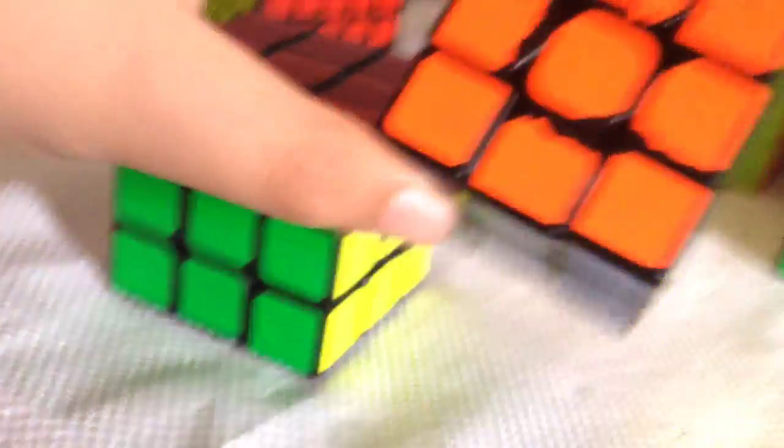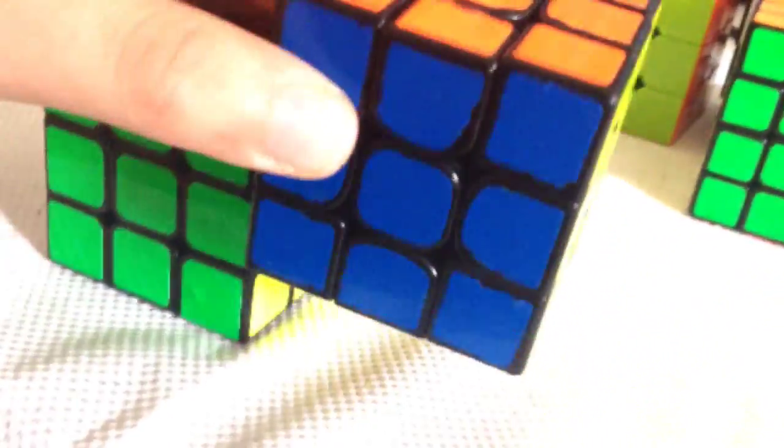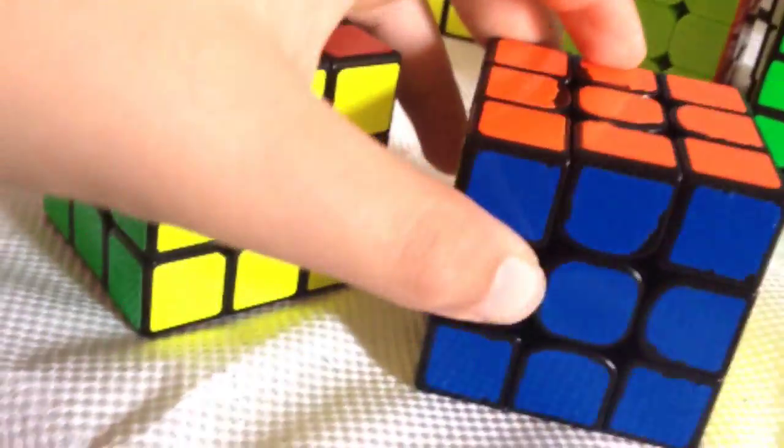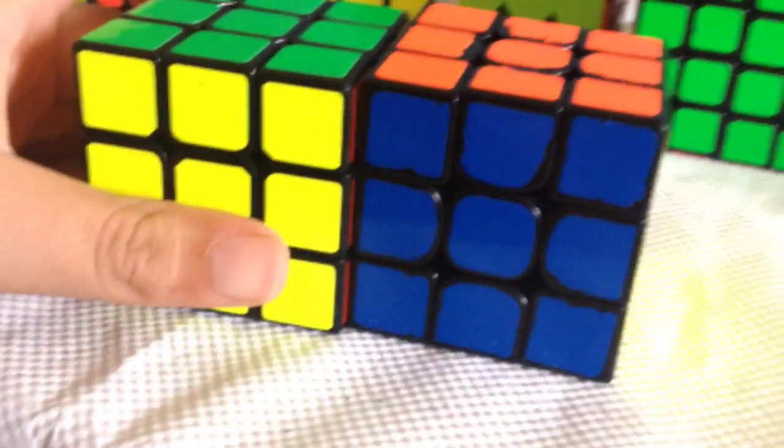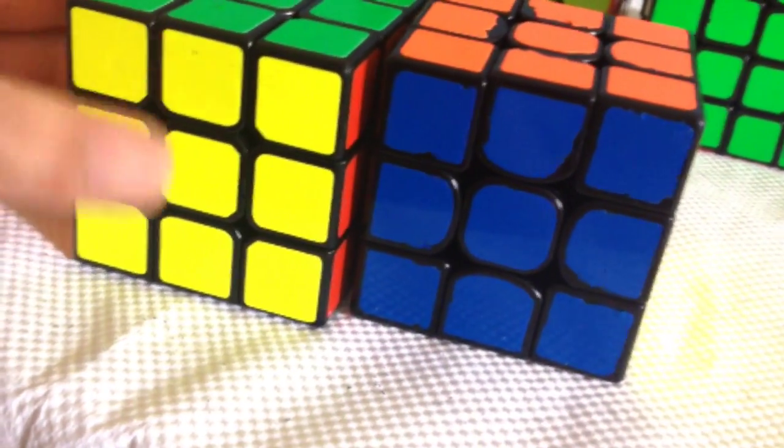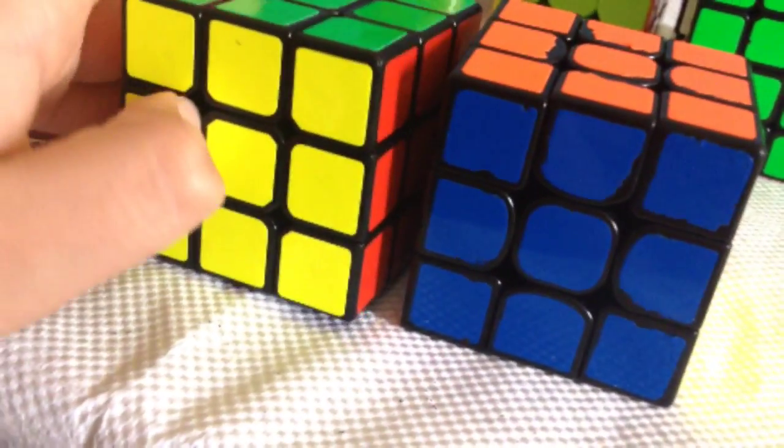For 3x3 OH, the exact same cubes. My main cube is the Vox V3 and backup main Xanxi. I want a sub 23 average and hopefully a sub 20 single.